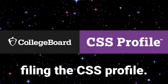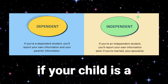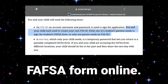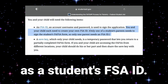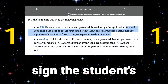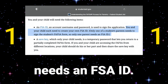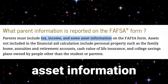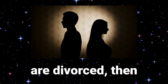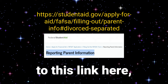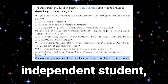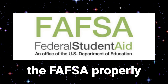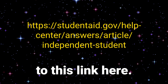For the FAFSA, if your child is a dependent student, two unique FSA IDs are necessary to complete the form online — a parent's FSA ID and a student's FSA ID. Only one parent needs to sign the student's FAFSA form, but if the parents live together, both are required to report their income and asset information. If you have divorced parents, refer to the relevant links. If you are an independent student, you will not have to account for your parents' income.